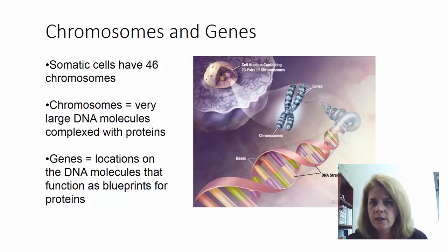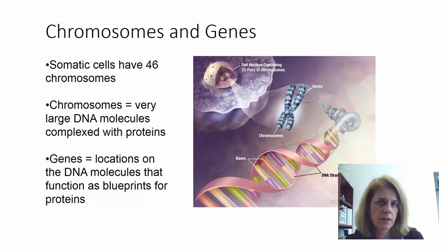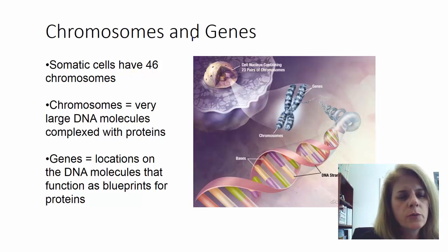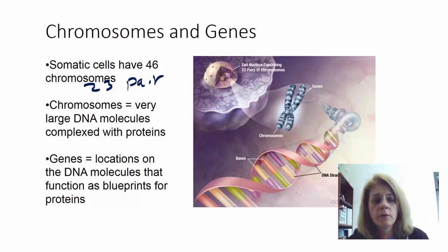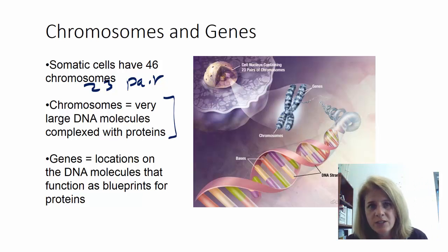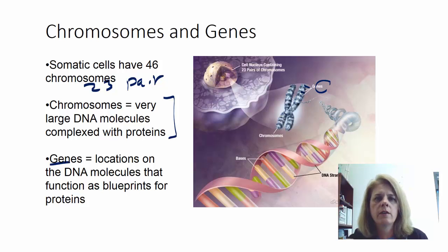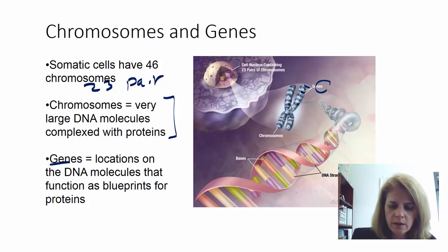Your cells have a nucleus, and inside that nucleus is your DNA. That DNA is packaged into structures called chromosomes. Your somatic cells — your body cells like cheek cells, skin cells, and stomach cells — all have 46 chromosomes. These chromosomes are divided into genes, and this is where your DNA codes for protein.